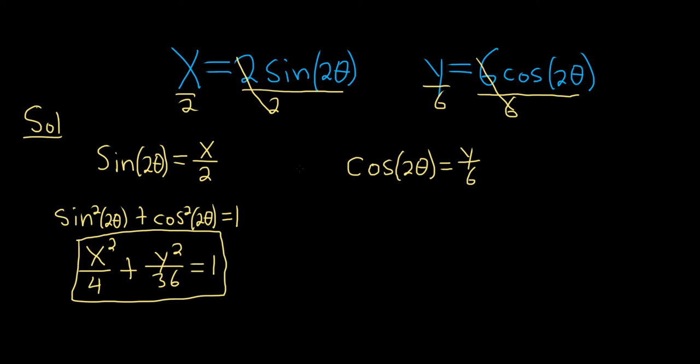So it's just a clever technique. Again, whenever you have sine and cosine or even other trig functions, you always want to solve for the trig functions and then use an appropriate identity. In this case, we had sine and cosine, so we used this identity here. And this would be the rectangular form.